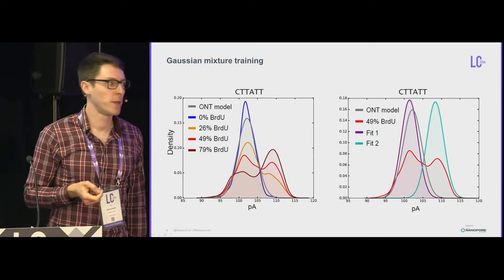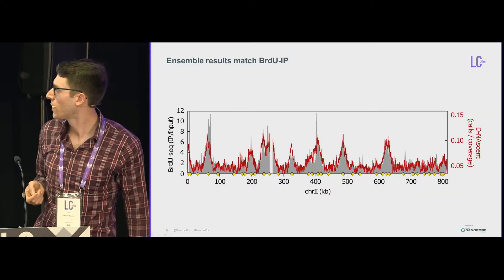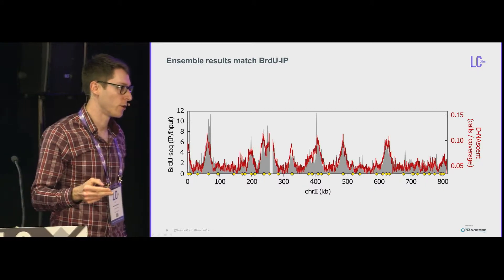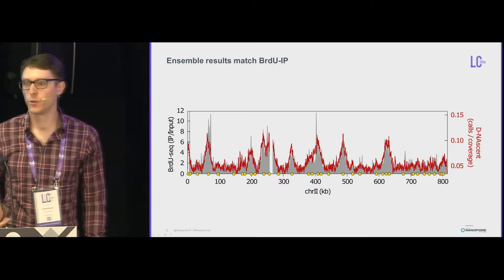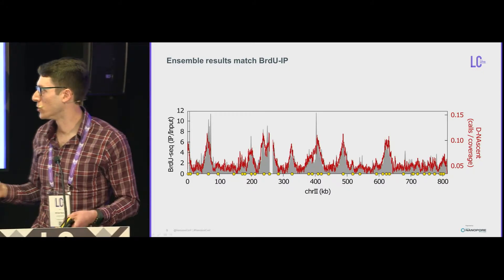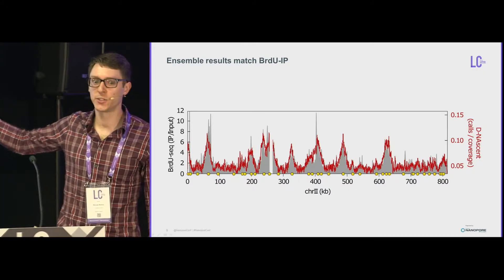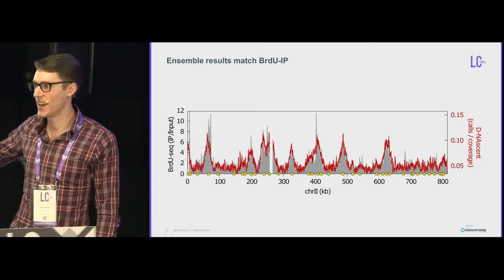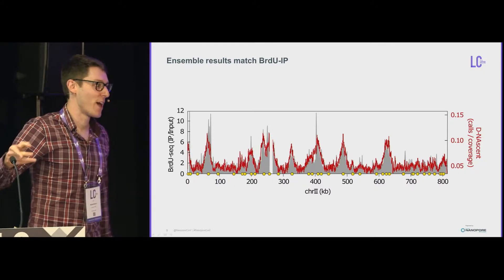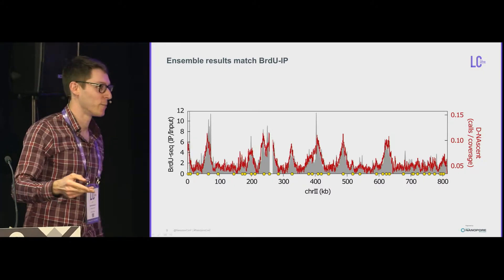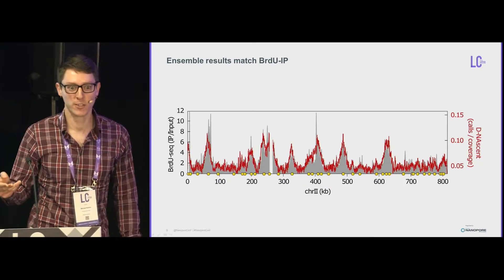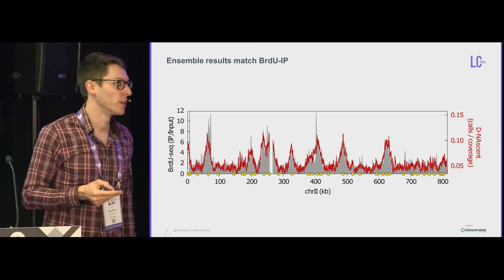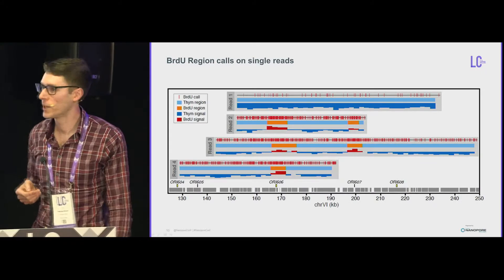We use an HMM-based detection approach, and if we compare the ensemble results of that approach to BrdU-IP — where BrdU is incorporated near origins — we find that it matches ensemble data really well. But of course, this is exactly not the point of doing this. We're using our method, turning it into ensemble data, and comparing it with ensemble data. We really want to be able to look at single molecules. And because it's nanopore sequencing, we can.